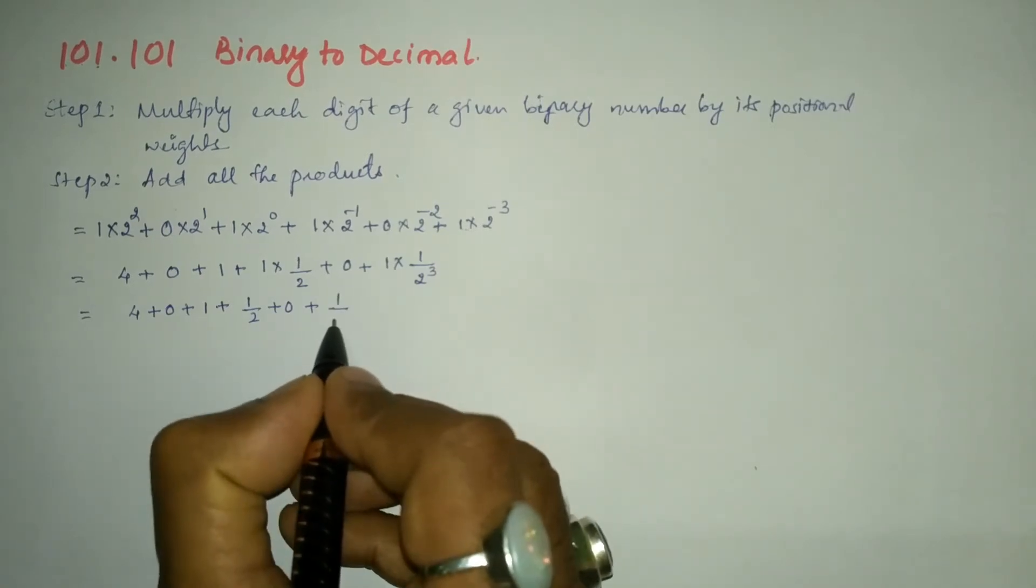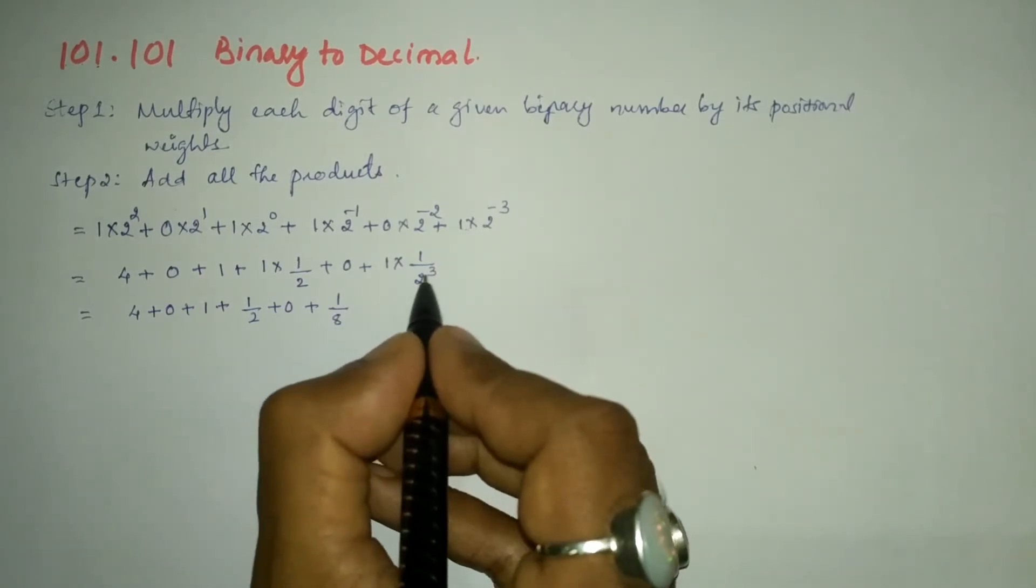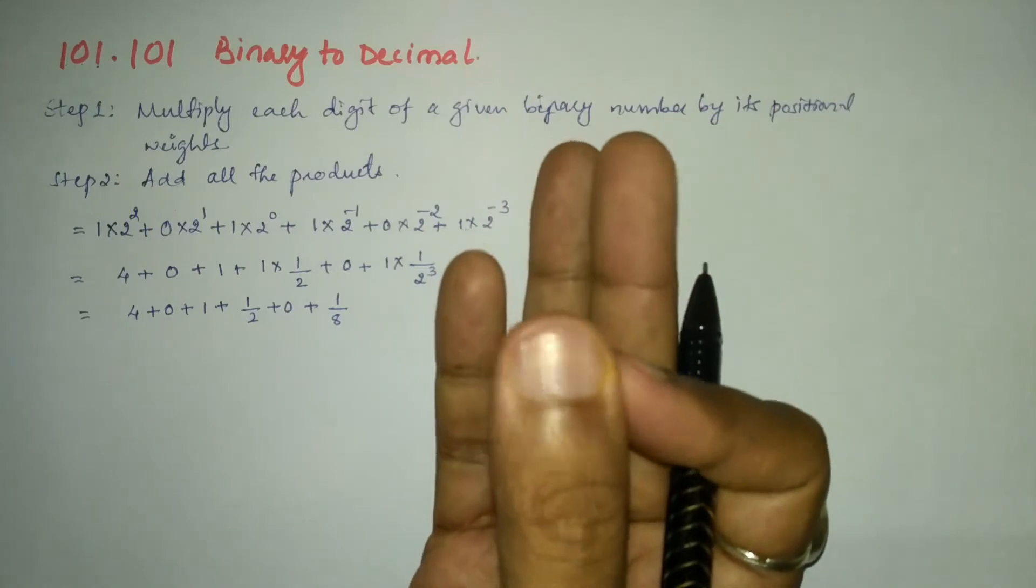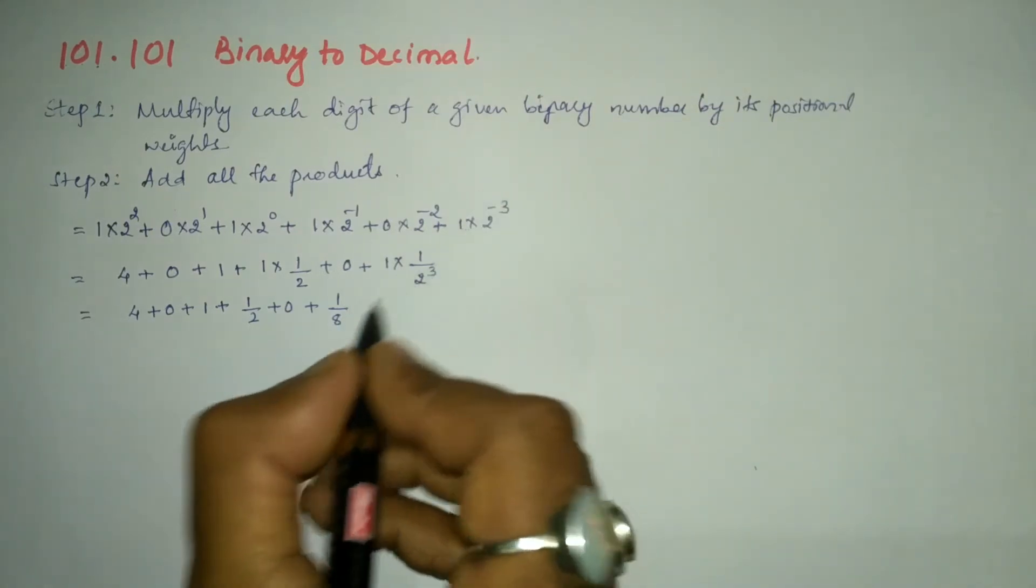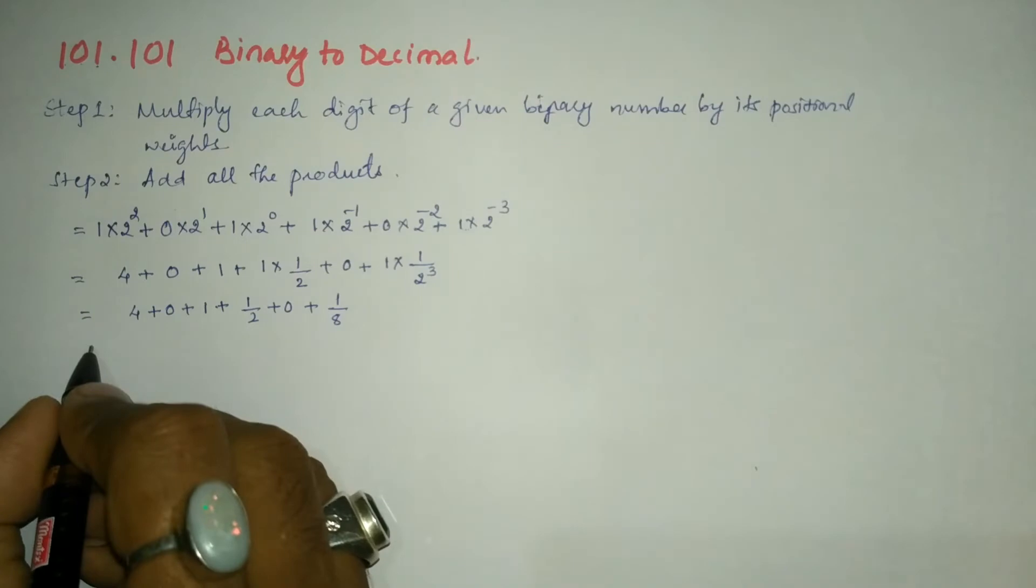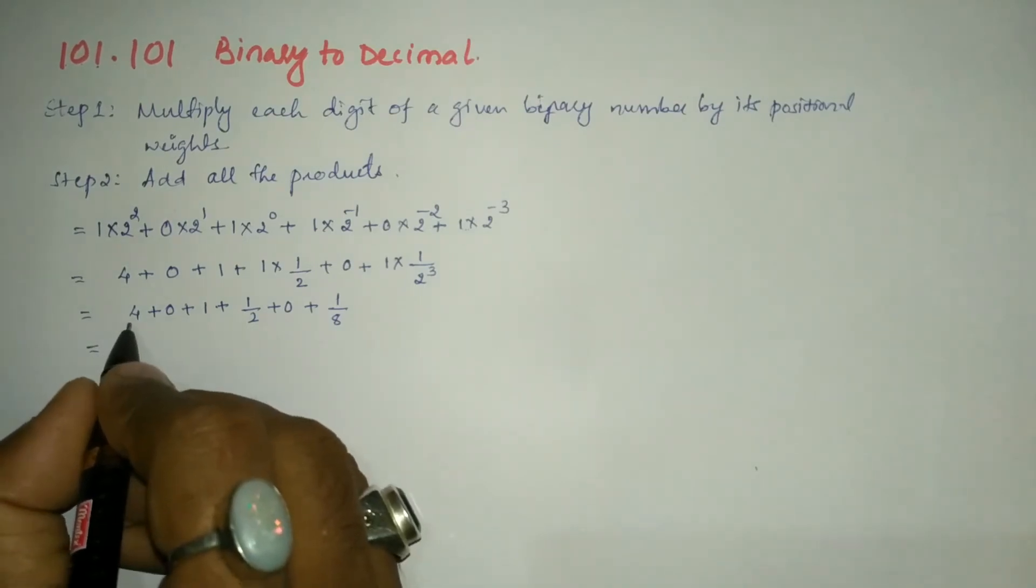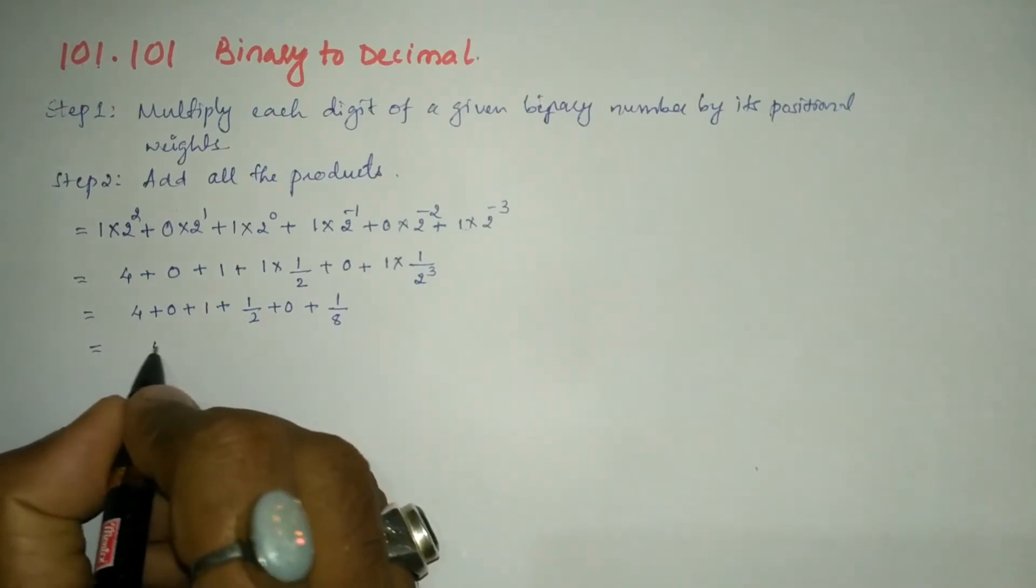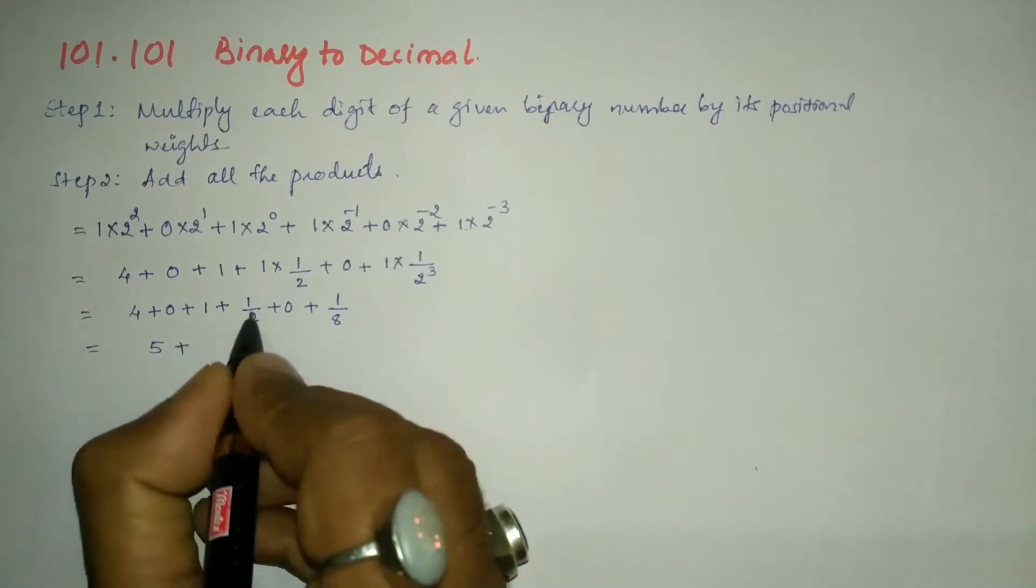Plus 0 plus 1/2³ can be written as 1 divided by 8, because 2³ is 2×2×2, so 2 is to be multiplied 3 times, hence it is 1/8.